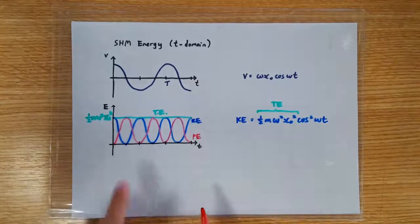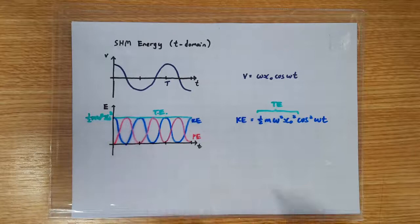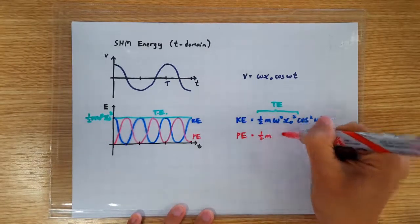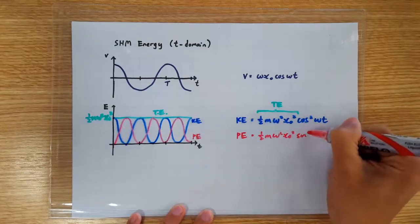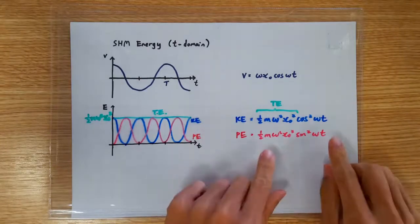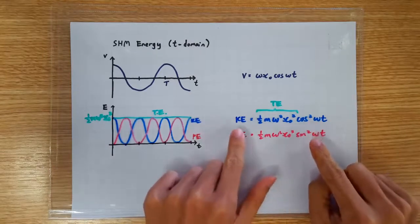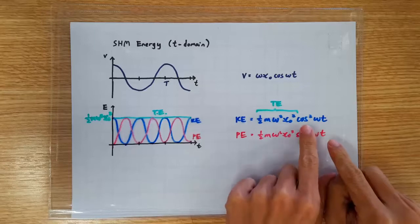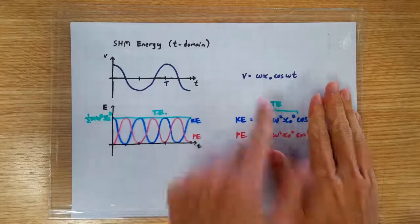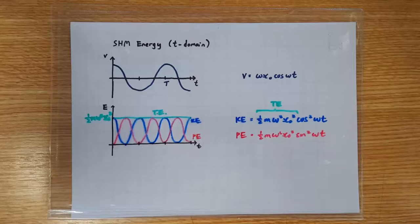So make a guess what is the mathematical equation to describe this variation. Make a smart guess. It looks like a sin squared omega t. Did we guess correctly? Yes, we did, because if you add PE and KE together, you get sin squared plus cos squared, which is of course 1. So we are going to get half m omega squared x naught squared, which is of course the total energy.